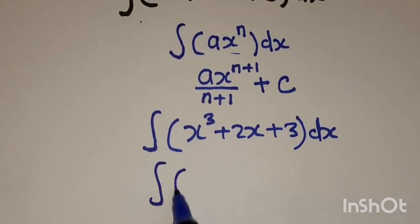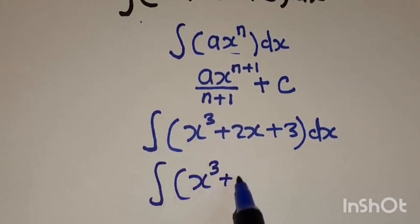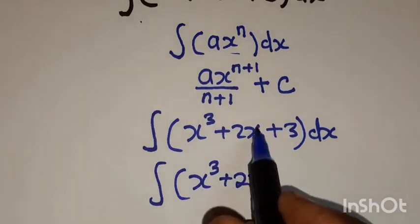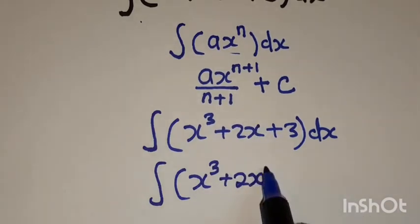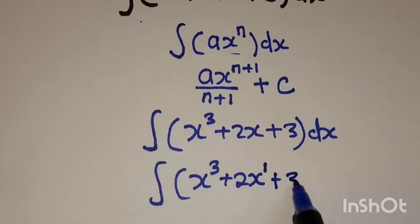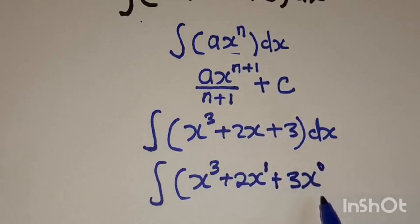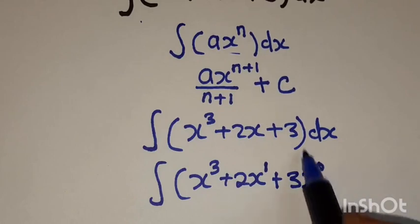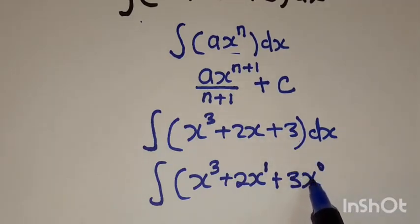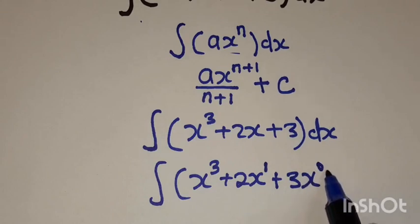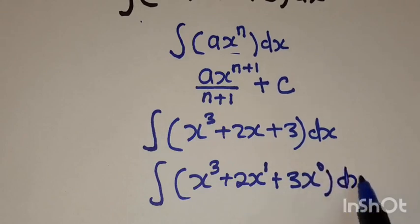So we are going to have the integral of x cubed plus 2x — here, 2x is the same as x to the power 1 — then plus 3, then x to the power 0. x to the power 0 is 1. Any number to the power 0 is 1. So when you have a constant like 3, it is the same as 3 times x raised to the power 0, then dx.